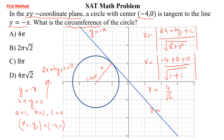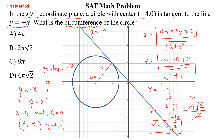Multiplying and dividing by √2, this is equal to 4√2 divided by 2, which gives radius r = 2√2. The circumference is C = 2πr = 2π × 2√2 = 4π√2, and this is the required answer.